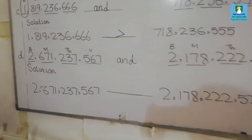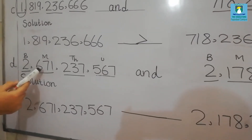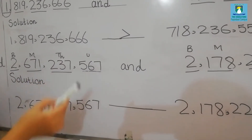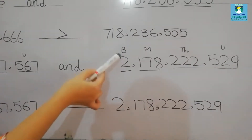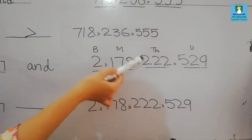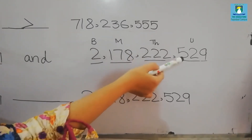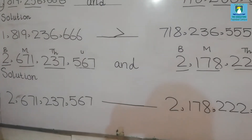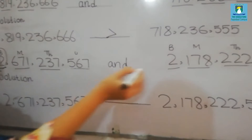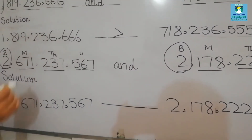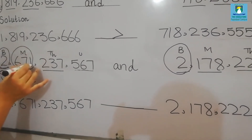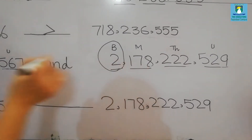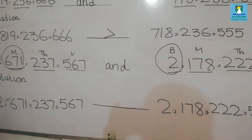Next is Part D. The first value is 2,671,237,567 and the second value is 2,178,222,529. Comparing: in the first value we have 2 billion, and in the second value it is also 2 billion — the same. Move to next: 671 millions versus 178 millions, so the first value is greater than the second value.